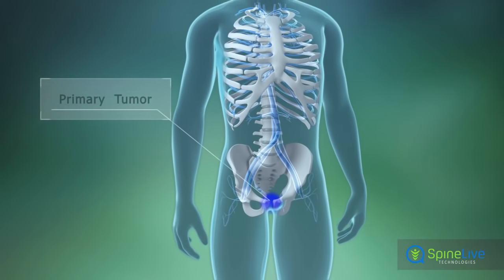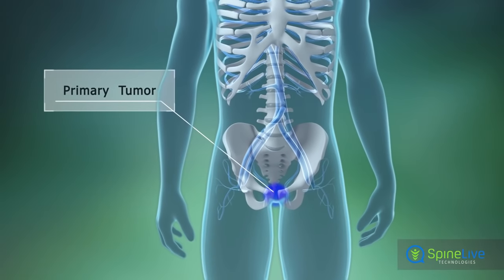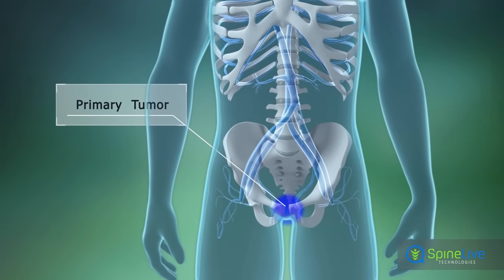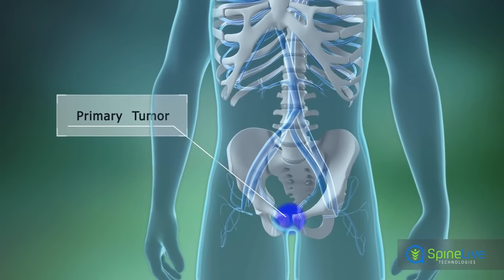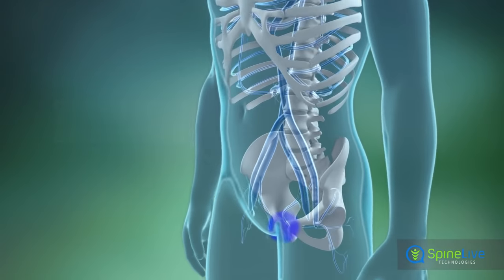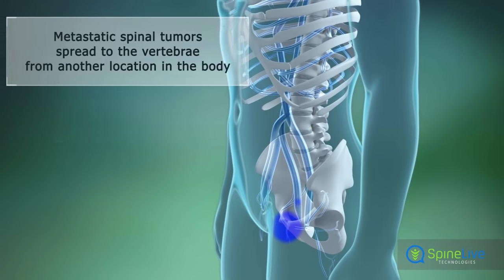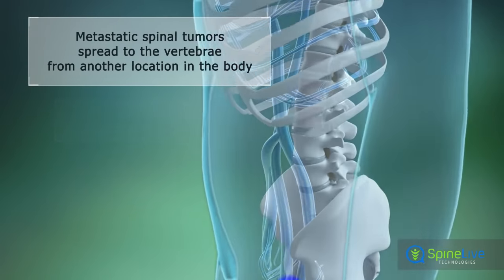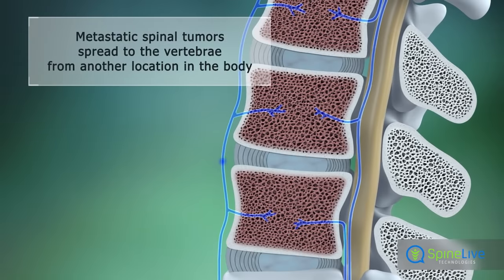Metastatic spinal tumors spread from cancerous cells outside the spine to the vertebrae, moving through the circulatory system to the bone marrow, where they form tumors.